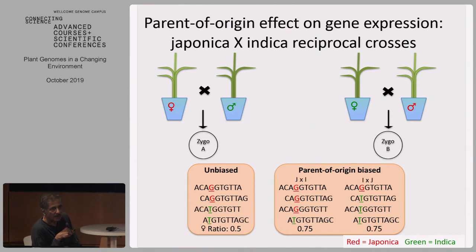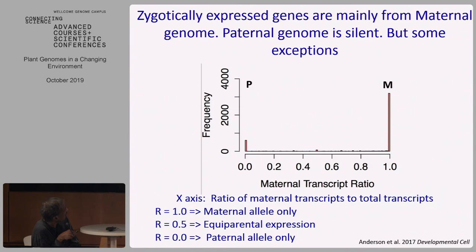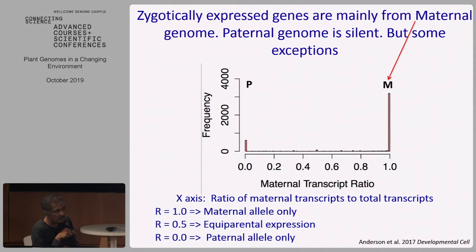The other question is how the two genomes — the maternal and the paternal — contribute to embryogenesis. To do this, we needed to make hybrids where you could distinguish the maternal and paternal alleles, using japonica and indica reciprocal crosses. On a plot where the y-axis is number of genes and the x-axis is the maternal ratio — one meaning all maternal, zero meaning all paternal — you can see a very large peak showing that most genes are in fact being expressed only from the maternal genome at the early stages.